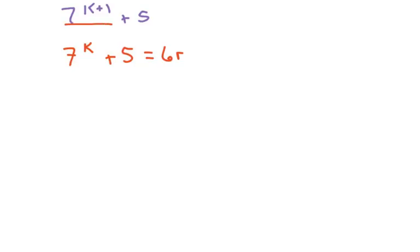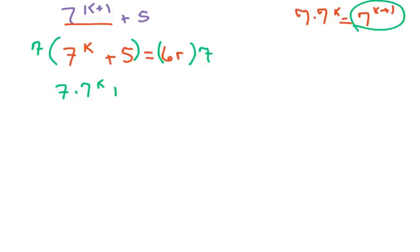So to get it to look like that, I notice that 7 times 7 to the k equals 7k plus 1. So what I'm going to do is multiply both sides by 7. And what we're going to get is 7 times 7k, which we already know equals that, plus 35 equals 42r.